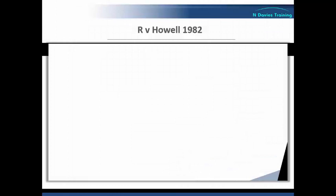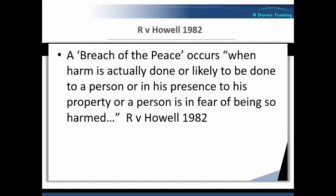According to case law laid down by R. V. Howell in 1982, a breach of the peace occurs when harm is actually done or likely to be done to a person or in his presence to his property, or a person is in fear of being so harmed. So if a breach of the peace is likely to occur, citizens, including police officers, can use reasonable force to assist in preventing or terminating it. In practice it tends to be police officers who exercise this power, usually when arresting to prevent a breach of the peace.